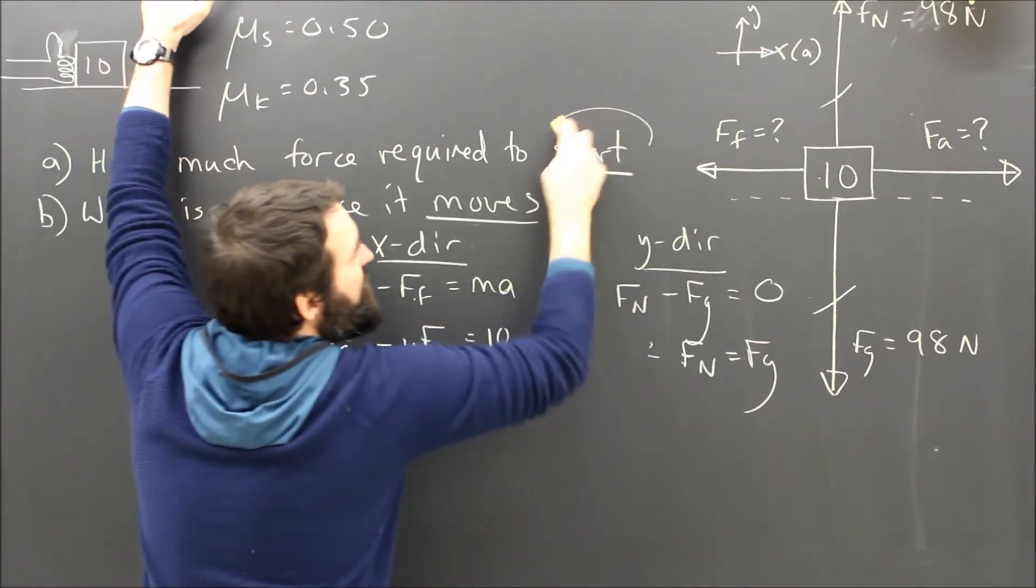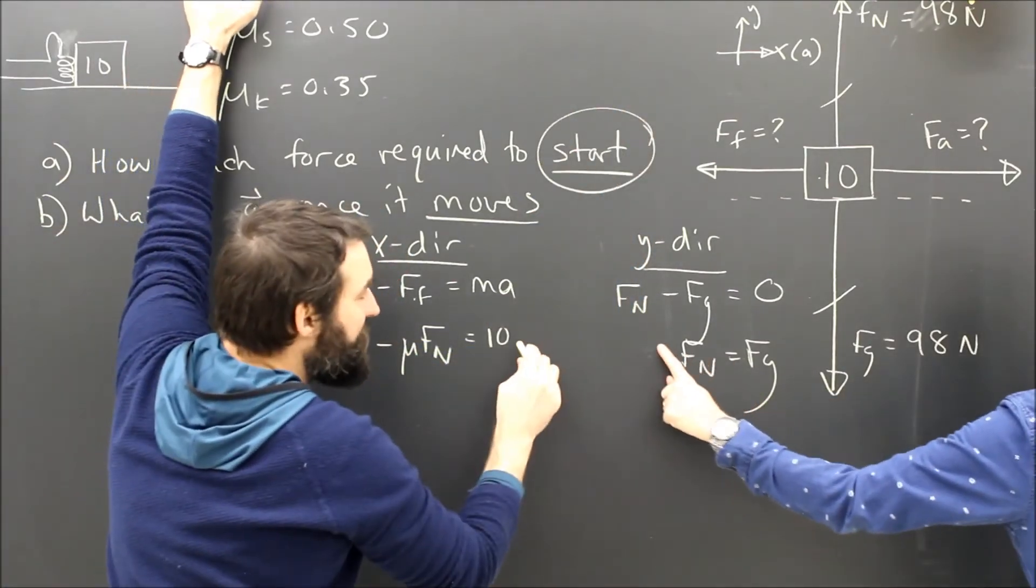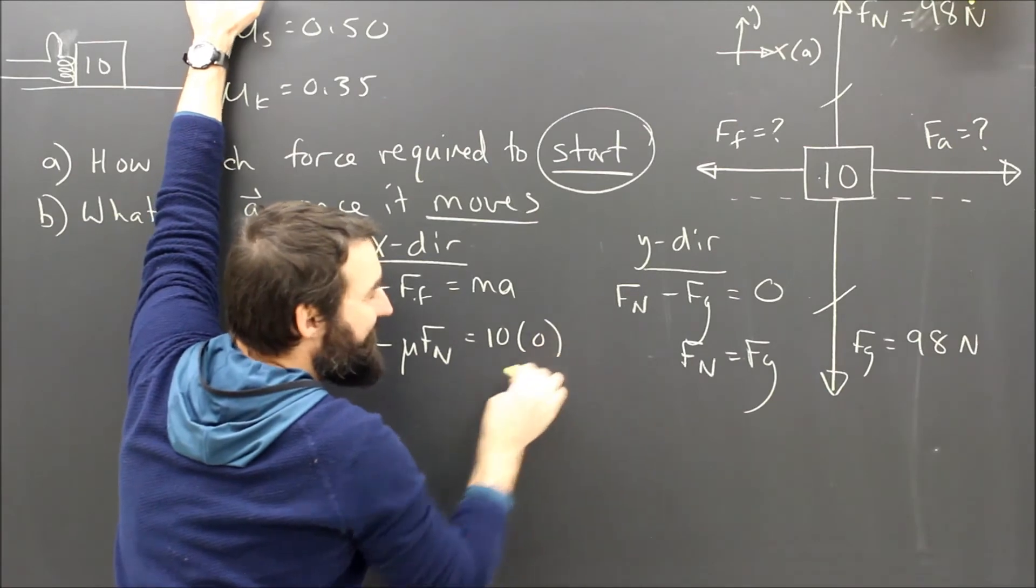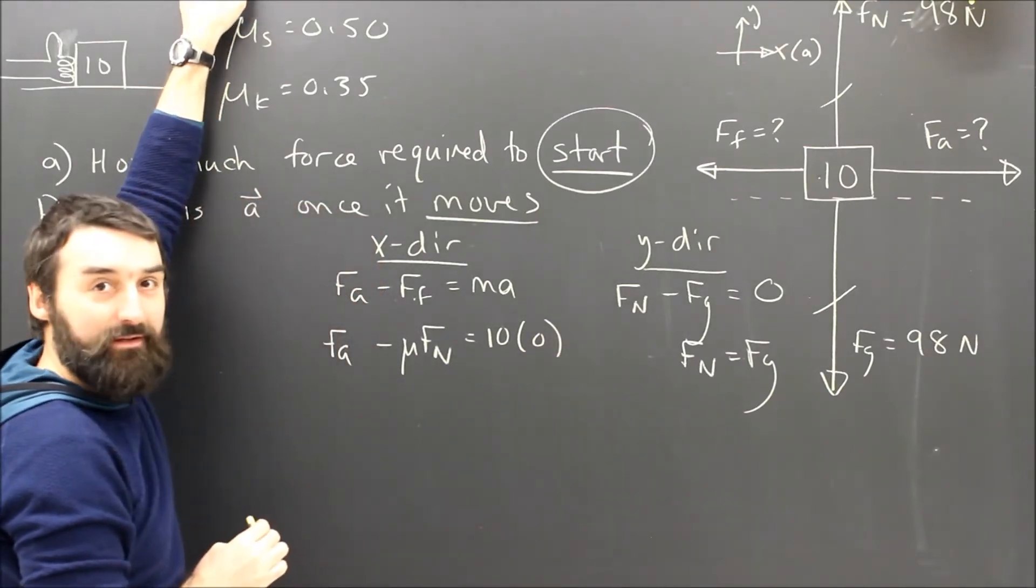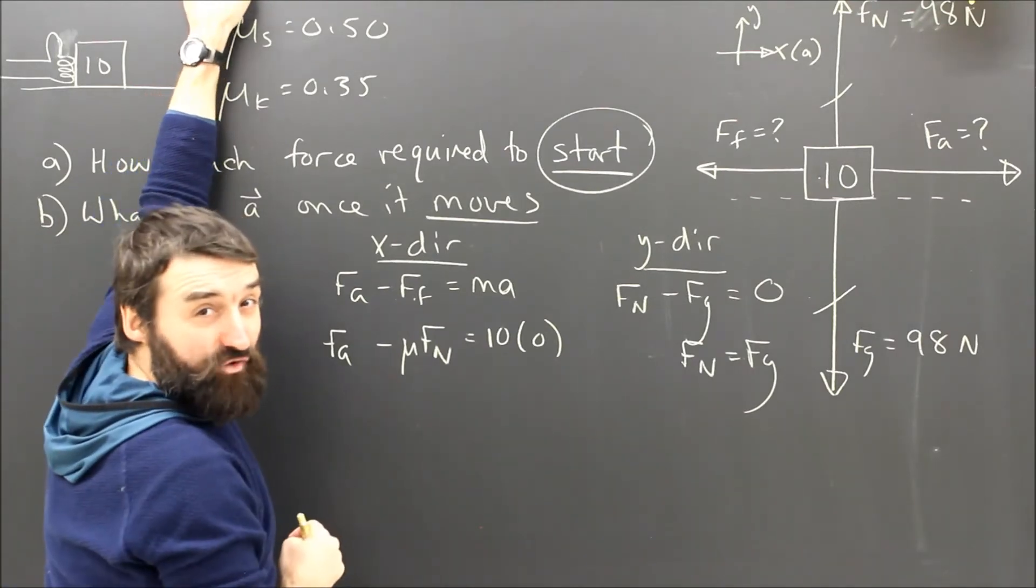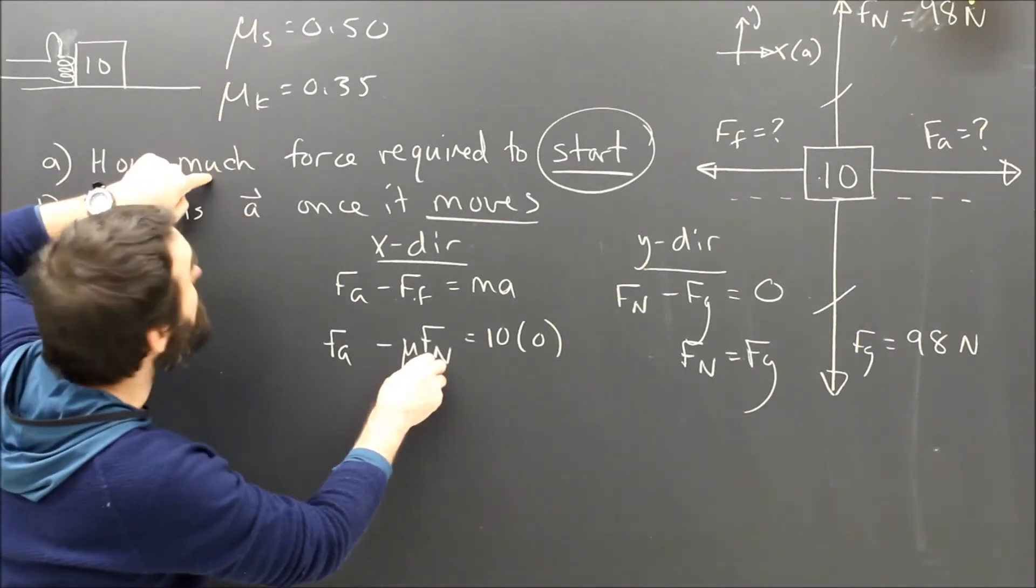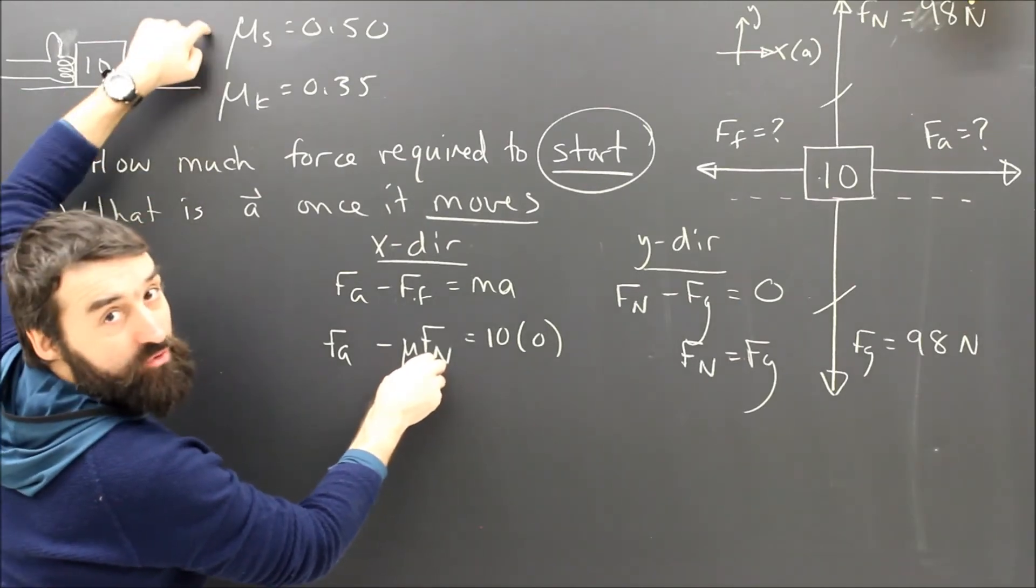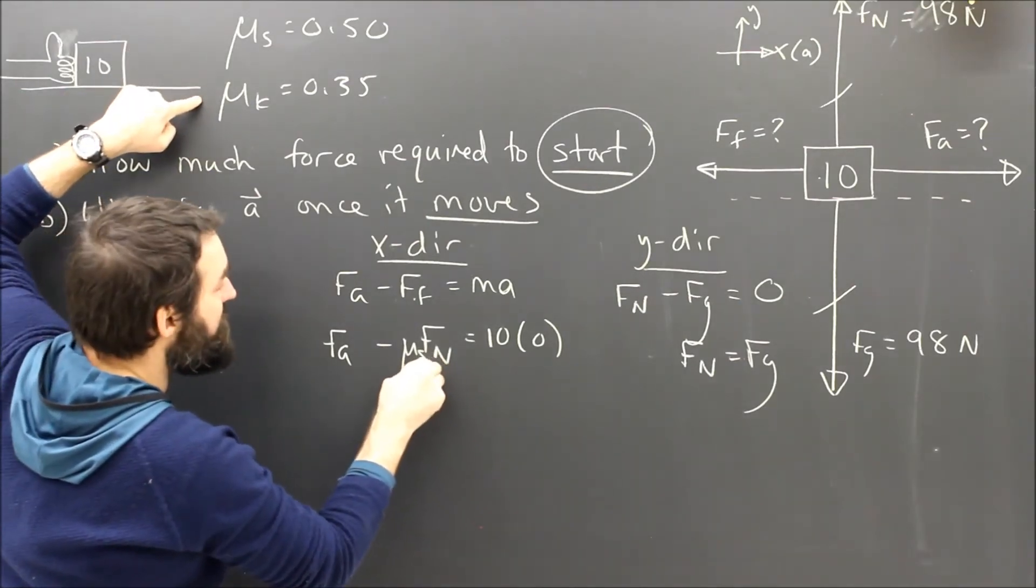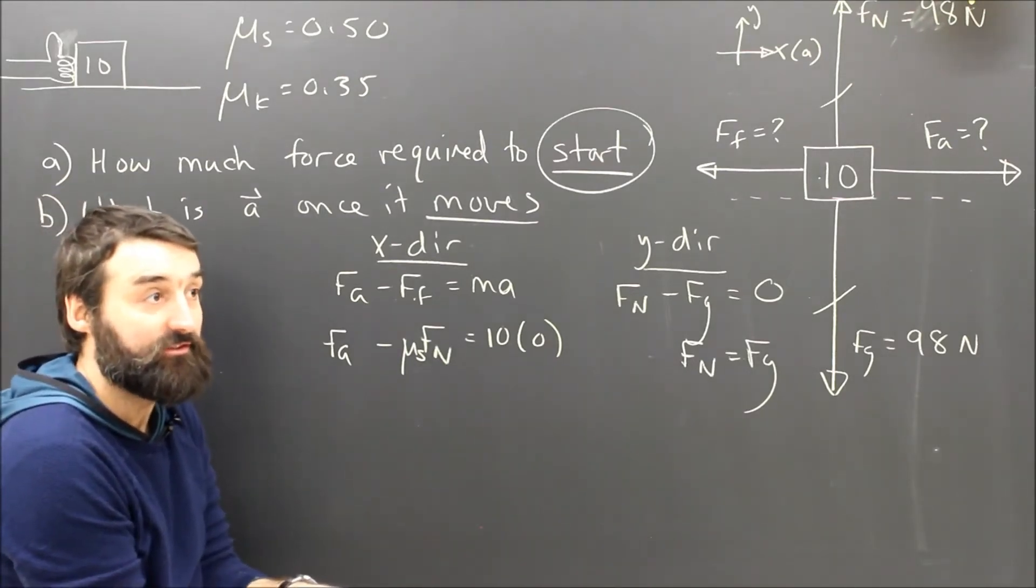If this thing is just going to start moving, it's not moving yet, so the acceleration is going to be zero. At first, when the friction is at its max. So for part A, it hasn't started moving yet, so which μ do I want? μs or μk? I want μs, the static friction, because it hasn't started moving yet, so it's still static.